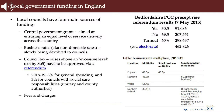Local government in England has four main sources of funding: central government grants, business rates, council tax, and fees and charges. We'll cover all four in this section, so it will be quite substantial.